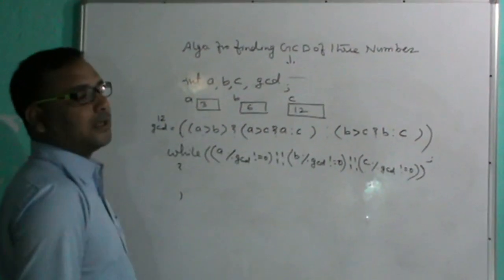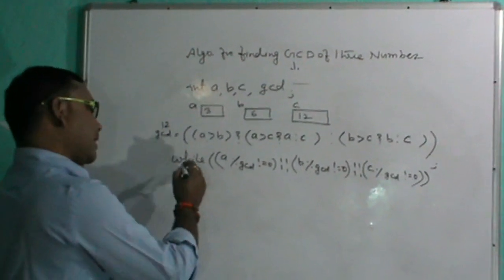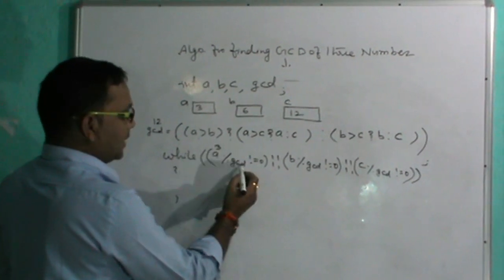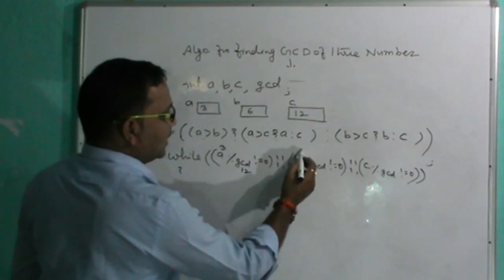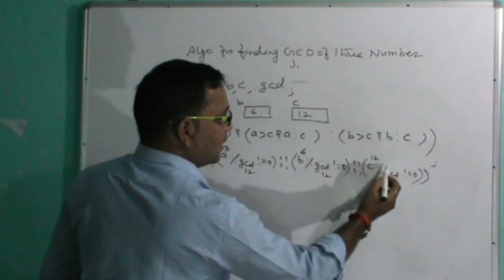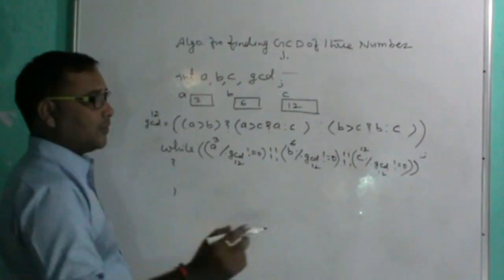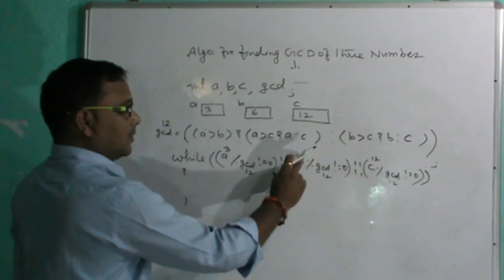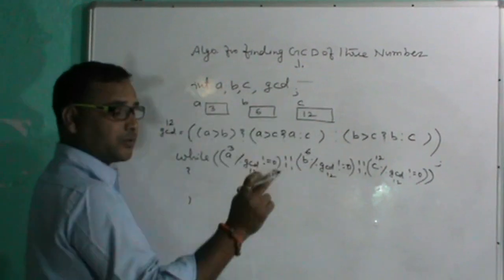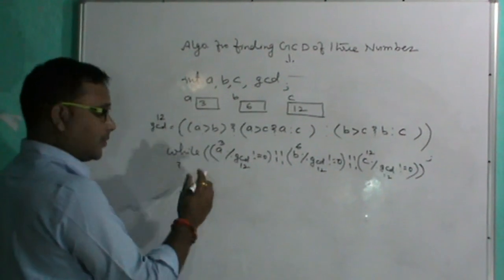With a = 3, b = 6, c = 12, and GCD = 12: 3 % 12 = 3, not equal to 0 — true. 6 % 12 = 6, not equal to 0 — true. 12 % 12 = 0, not equal to 0 — false. Since at least one condition is true, the loop executes and GCD decrements to 11. The condition is checked again and GCD continues decrementing: 10, 9.